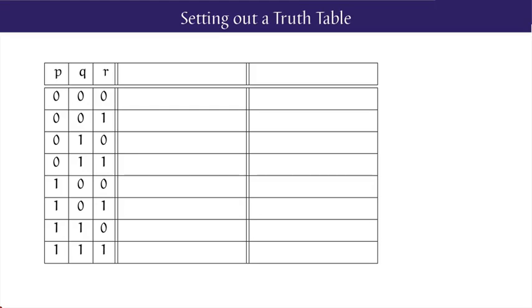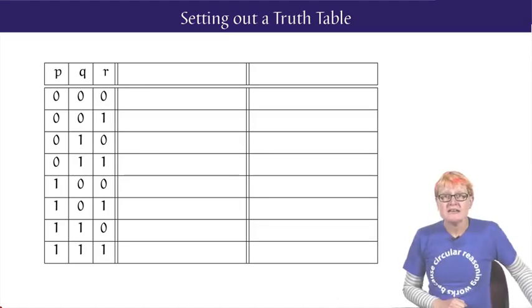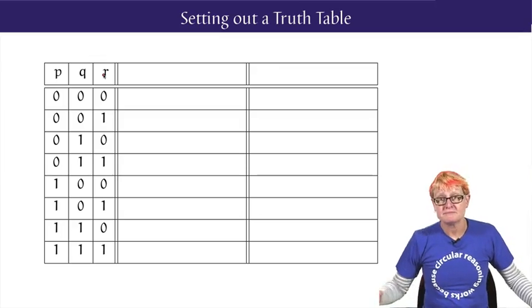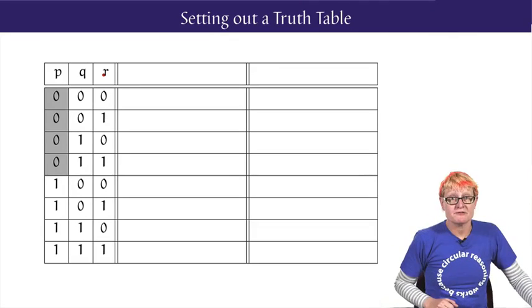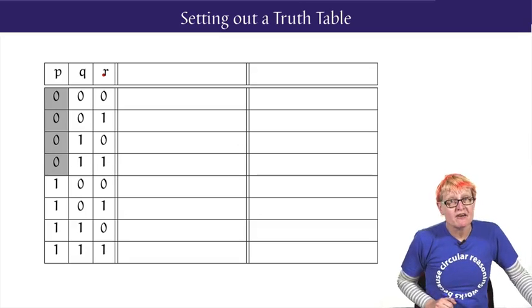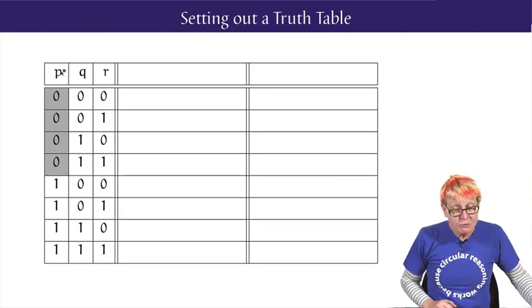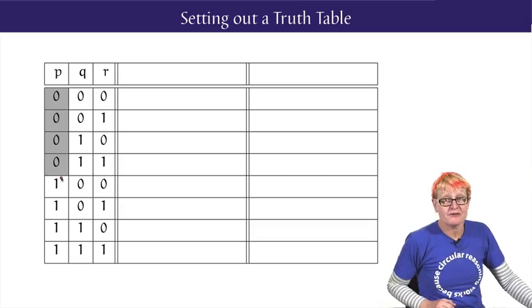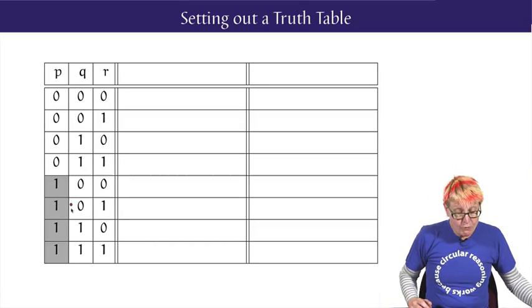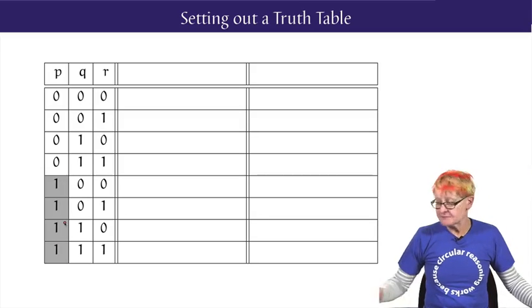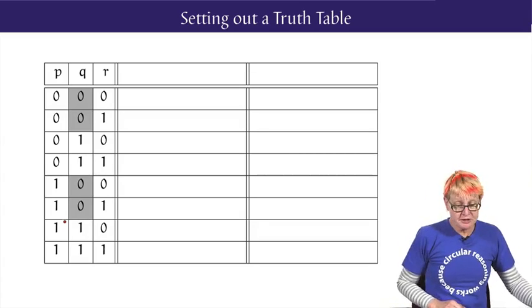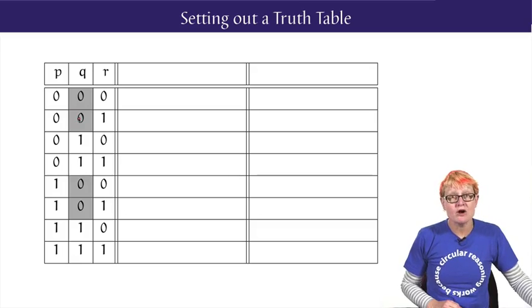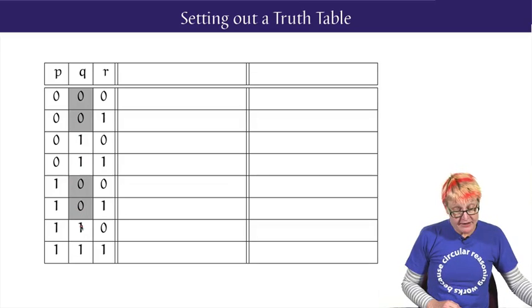To set out a truth table for, say, 3 atomic propositions, an orderly way to do it is by listing the atomic propositions in order from left to right, P, Q and R. Then to systematically list all the 8 combinations of truth values, a clever way to do it is vertically rather than horizontally. Start with the leftmost atomic proposition, P, and we're going to write zeros in the first half of the rows, the first four rows, and then write 1 in the second four rows under P. Then for the next atomic proposition, we will go down the rows by twos, a quarter of the total, giving the first two rows zeros, the next two rows one, the next two rows zeros, and the final two rows one.